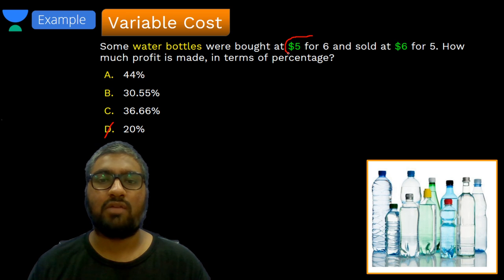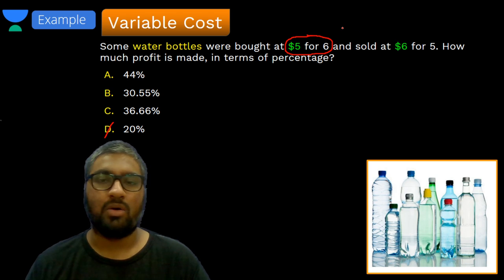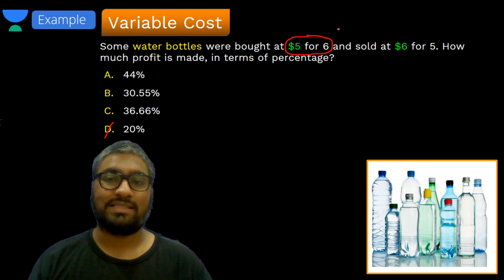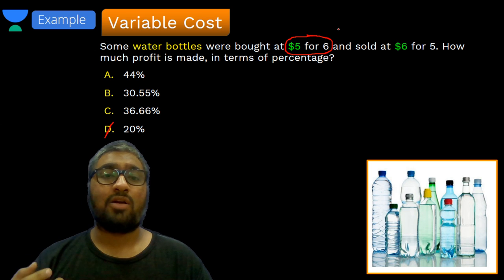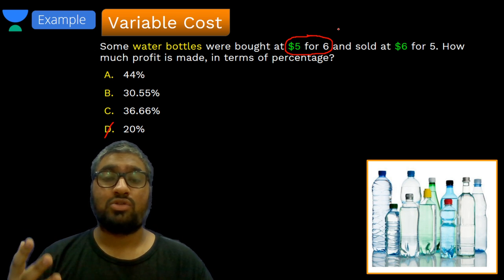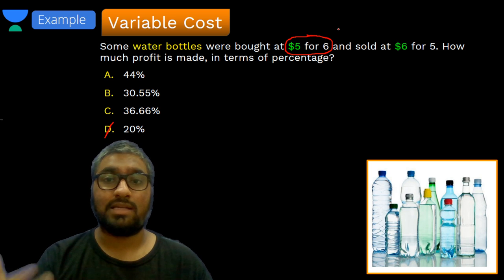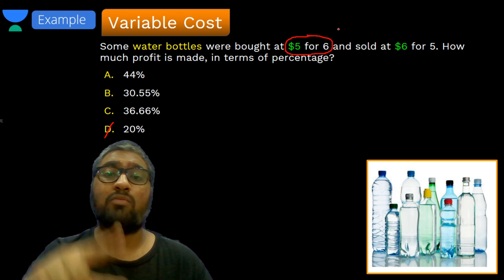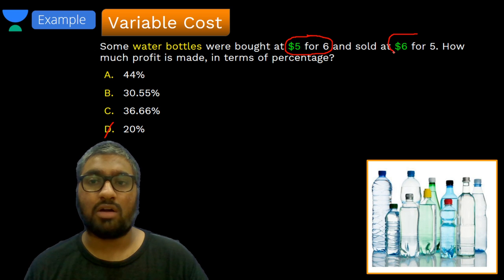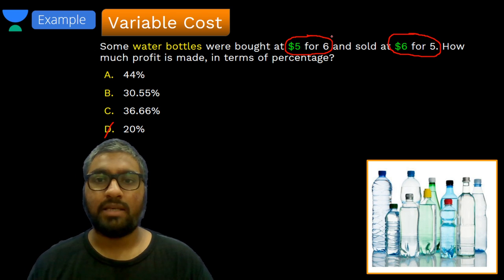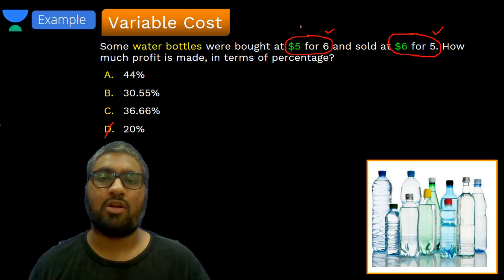If you see, $5 is not for one water bottle. Anyone who considered $5 for one water bottle, so six water bottles it's $30 — no, that's not the right way of looking at the question. What does it mean? Some water bottles were bought at $5 for six, which means when six water bottles were bought, it cost them $5. In Hindi it would be: six bottles for five rupees. But when it was sold, the rate is $6, not for one, but for five. So here we are looking at six water bottles for cost, but five water bottles for selling. If the number of elements are not the same, we cannot go ahead and directly calculate the percentage. Profit percentage cannot be directly calculated.